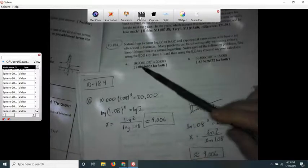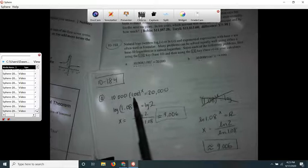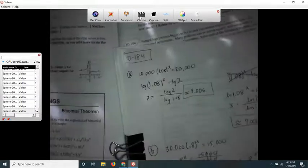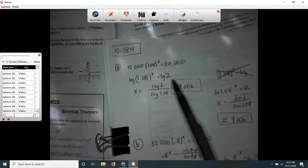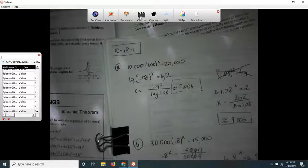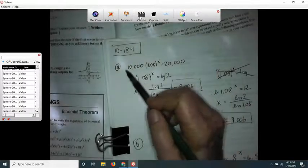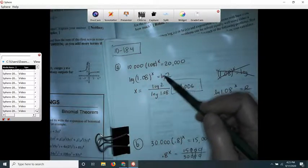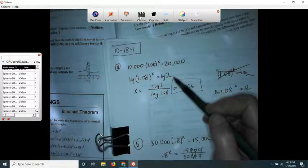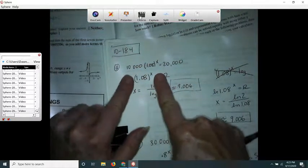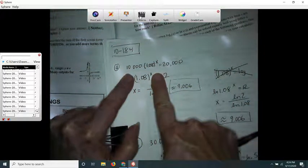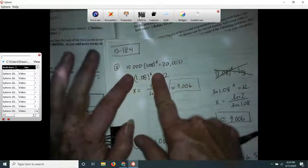The original problem was 10,000 times 1.08 to the x equals 20,000. What you want to do is get the x almost by itself, or try to solve for x. I divided both sides by 10,000 and that left me with 2 over here. So I didn't have the logs there yet, but I had 1.08 to the x equals 2. Then how can I get the x by itself?